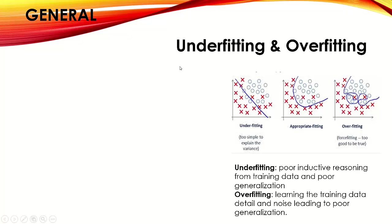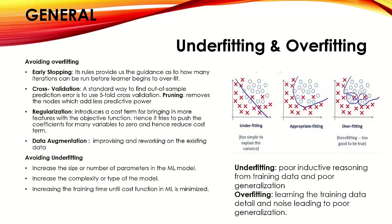As you can see in the image, an underfitting model is on the left side where it classifies very poorly. The middle represents an appropriate fitting scenario where the error is very low — only two crosses are misclassified. On the right side, the model has learned too much of the input data and is not able to generalize. In other words, underfitting is poor inductive reasoning and poor generalization, while overfitting means the model learns input data details and noise.